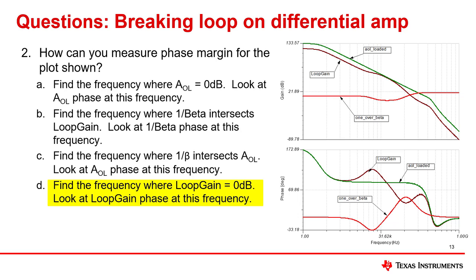This is the same point where 1 over beta and AOL intersect. The phase margin is measured by looking at loop gain phase at the point at which loop gain equals 0 dB. It can be useful to delete all other graphs other than loop gain phase as these plots are not needed for phase margin.